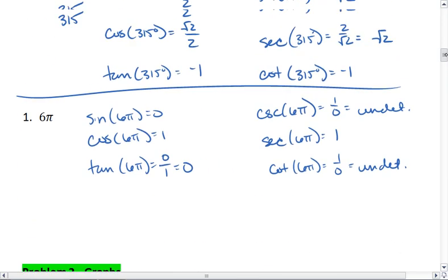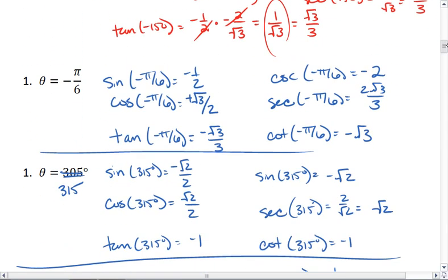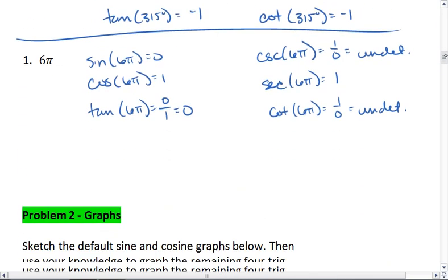Hopefully this made sense. Definitely, for my class, I will ask you values that you should know from your unit circle. If, for whatever reason, I ask one that you don't know, you honestly just use your calculator. Go ahead, just plug in sine of 305, if that had been 305 degrees. Plug in cosine of 305, and use those numbers to figure out the rest of your values.